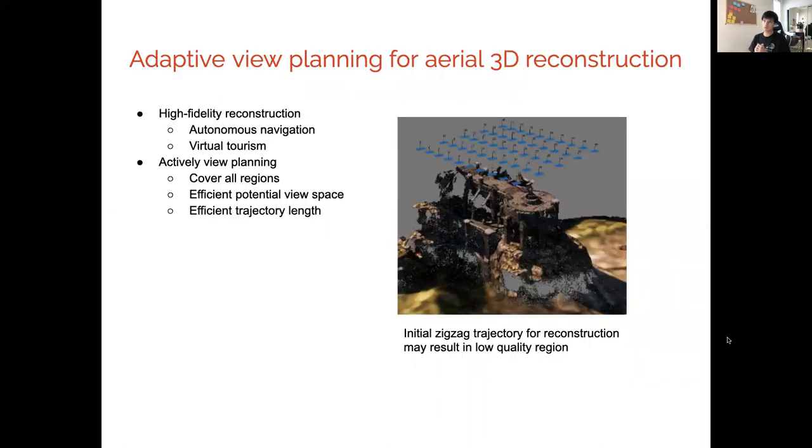Next, we introduce our next work on adaptive view planning for 3D reconstruction. Previous method selects a subset of trajectory along an existing trajectory. However, you can see in this example, a simple zigzag trajectory on the top cannot reconstruct well the bottom of those scenes.